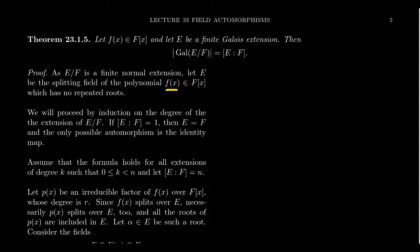Because it's a finite normal extension, without loss of generality we can suppose E is a splitting field for a single polynomial F(x) whose coefficients come from F. And since it's a separable extension — part of the Galois definition — we can assume F(x) has no repeated roots.